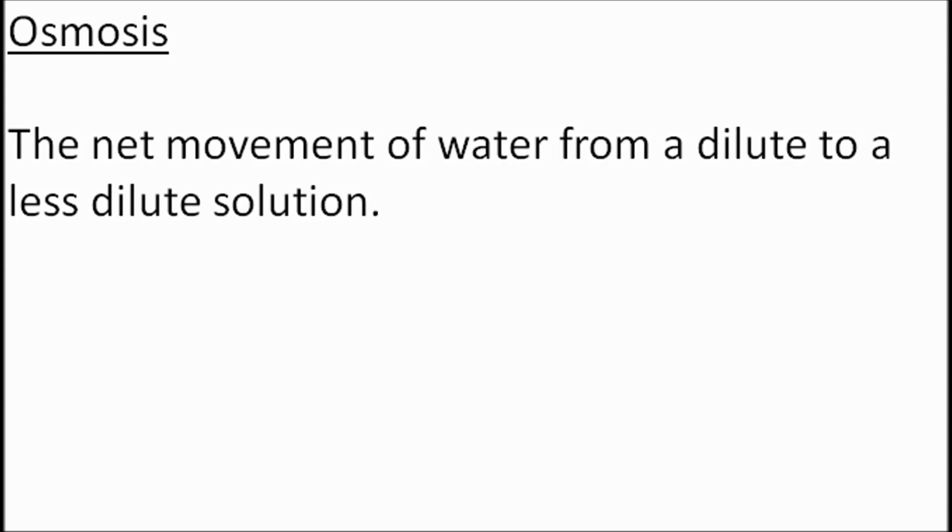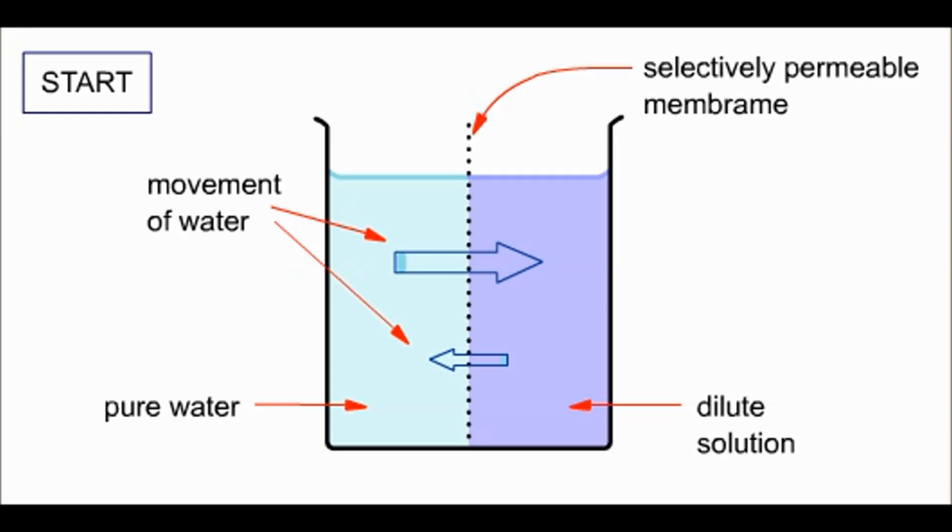Let's finish up by talking about osmosis. Now, osmosis is the net movement of water from a dilute to a less dilute solution. It's kind of like the diffusion of water. So, let's have a look. Okay, so here we've got a beaker and we've got a selectively permeable membrane or a semi-permeable membrane. Now, permeable means it will let things go through it. Semi-permeable or selectively permeable means it will only let certain things go through it. Big things like starches and proteins won't go through this. Little things like water and maybe glucose will go through it.